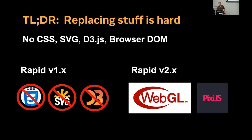All this stuff I'm going to talk about — replacing stuff is hard. In our last year, we showed how we could build a faster renderer, but what we showed off in Tucson was really not a functional editor. The add point, add line — none of that stuff worked. Basically I'm going to talk about what we had to replace.